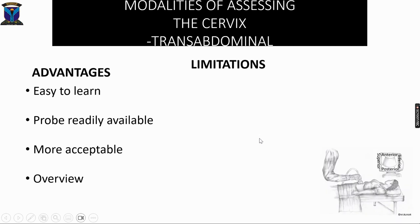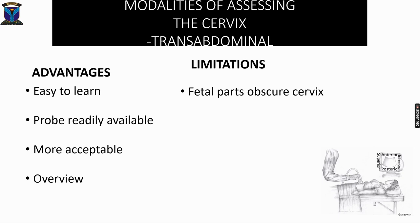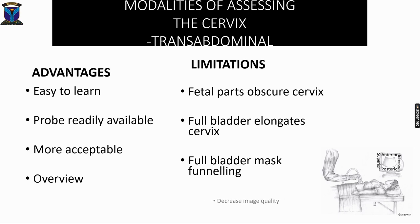The advantages of transabdominal imaging of the cervix are: it is easy to learn, the probe is widely available, it is more acceptable to patients, and it gives a global view of the cervix. However, the limitations include: fetal parts can obscure the cervix making it difficult to assess the internal os, a full bladder will elongate the cervix yet a full bladder is required for transabdominal imaging, a full bladder can obscure funneling, and the image quality is not as good as with transvaginal imaging.